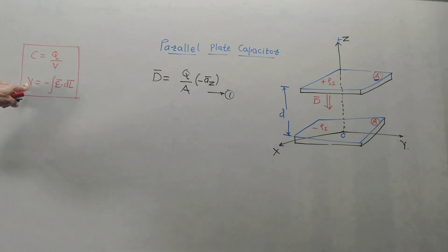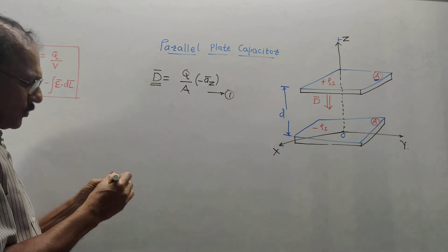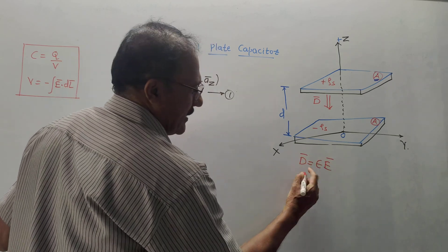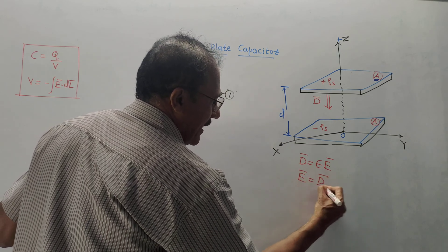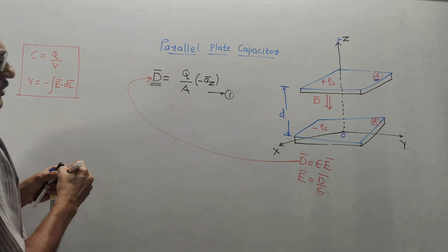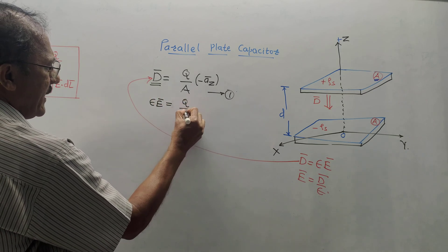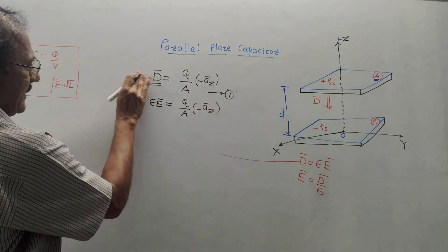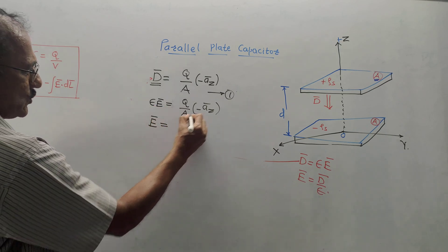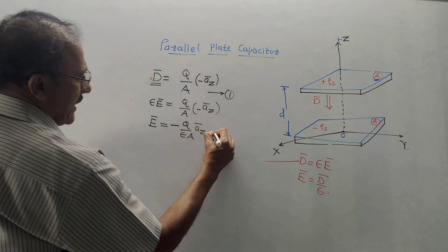C = Q/V, but before that I need to calculate the value of V. In the equation for V, I need the value of E-bar. Once we have D-bar, calculating E-bar is simple using the basic formula D-bar = ε·E-bar, where ε is permittivity. So E-bar = D-bar/ε. Substituting, ε·E-bar = (Q/A) in the direction minus az-bar. Therefore, E-bar = minus Q/(ε·A) times az-bar, which simplifies to E-bar = −Q/(εA) · az-bar. This is equation number one.